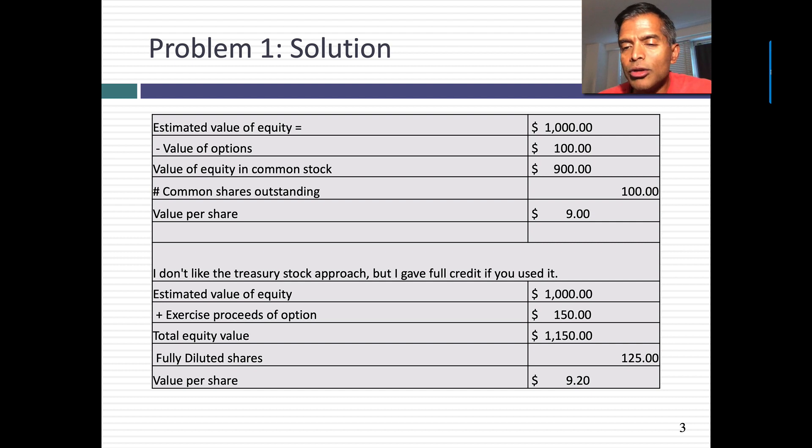In this problem, though, you could have done it using the treasury stock approach. What's the treasury stock approach? Here's what you do. You start with a billion dollars in intrinsic value for equity. You add to that the proceeds you would get if the options got exercised today, which is $6 the exercise price times 25 is $150. You get $1,150. Then you divide not by the 100 million actual shares, but by the fully diluted 125 million shares. You get a value per share of $9.20. You're saying, the two approaches give me different answers. Of course they do.